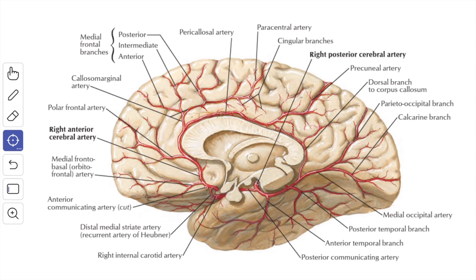The artery continues along the upper surface of the corpus callosum as the pericallosal artery. This gives off a large branch called the callosomarginal artery, which runs in the cingulate sulcus.